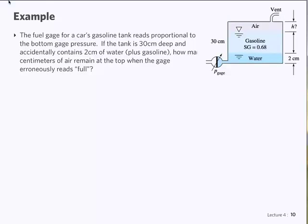Again, we're going to start with an example. This example is for the things we've just discussed in part one of the lecture before the break. So we have the following situation. This is a fuel tank for a car, and the fuel gauge actually reads